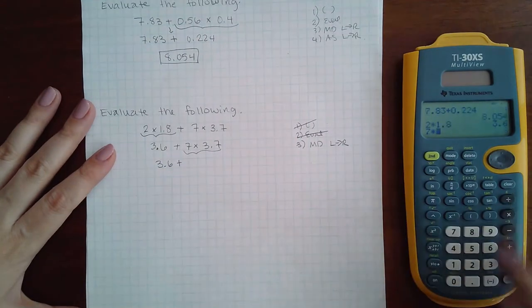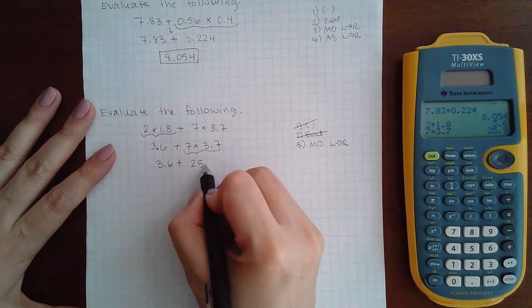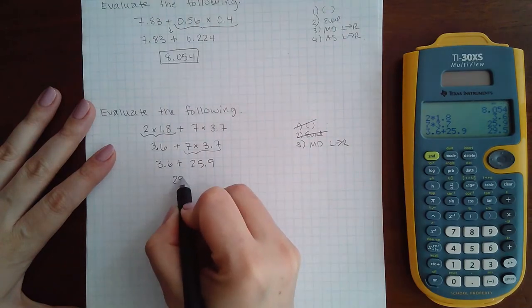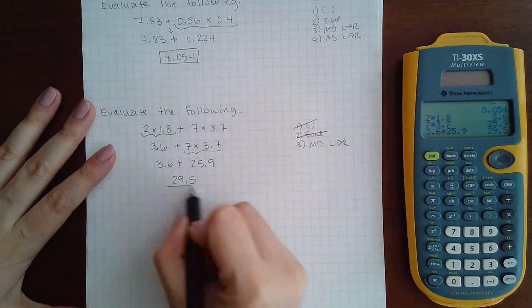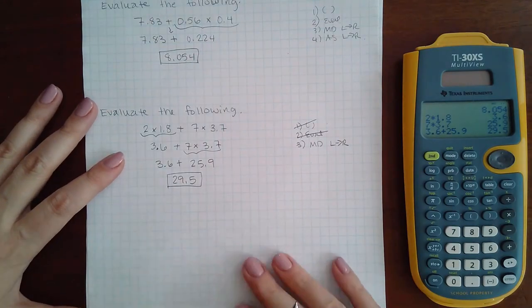And seven times 3.7 is 25.9, and then finally I can add, and I get 29.5, and this would be the final answer.